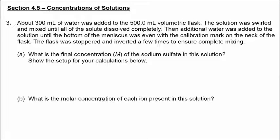In the next question, they are referring to how they prepared the 500 milliliters of solution. First, they added about 300 milliliters of water. They made sure that all of the solid solute was dissolved completely, and then they added additional water to the flask until the water level was even with the calibration mark on the flask.